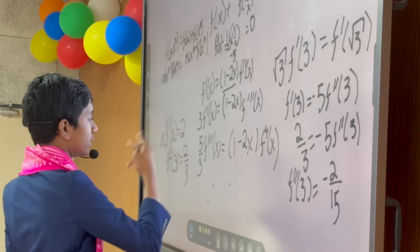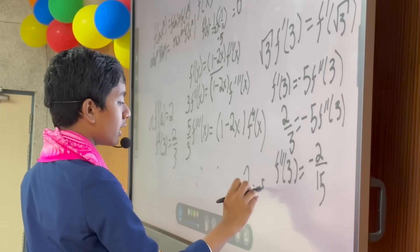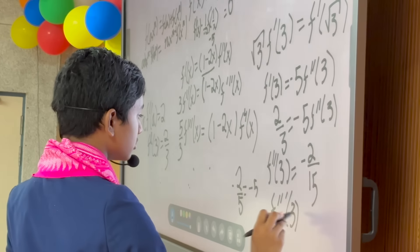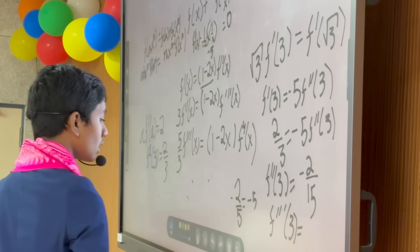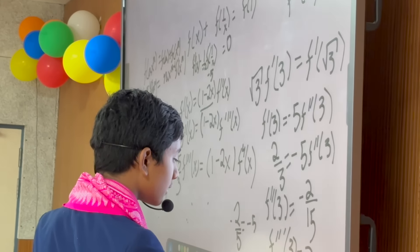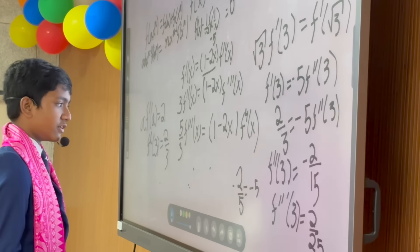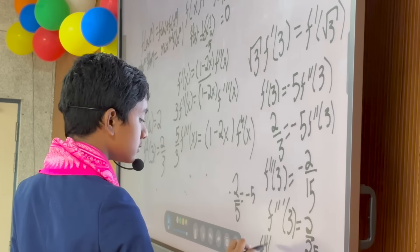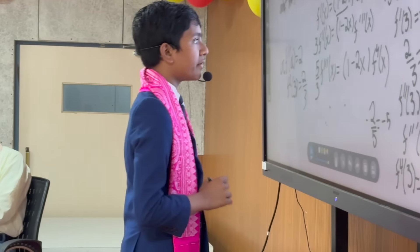When we plug this in, what do we get? −2/5 = −5·f'''(x), which means f'''(3) = −2/25. Then, once we multiply it by this, we get 2/15 here. So f''''(3) is going to be −5 times 2/15, which is −2/75.